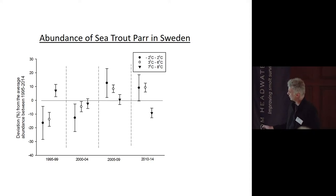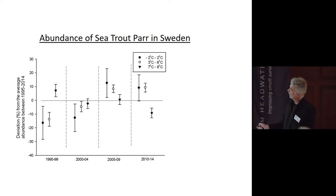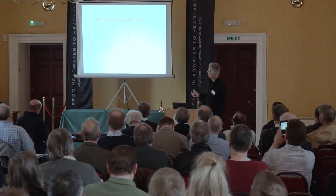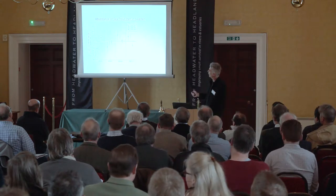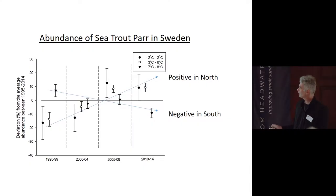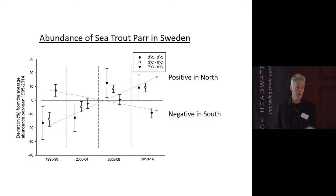Based on this electrofishing data, we can look at zero-plus fish abundance — this shows deviation from the average, with a trend line from 1995 to 2014. Since Sweden is a very tall country with a big climate difference — minus 2 to 2 degrees average in the north and 7 to 8 degrees in the south — we need to divide the data by region. The result is a positive development in sea trout parr populations in the north, but unfortunately a negative trend in the south, which is worrying because we don't fully understand why.